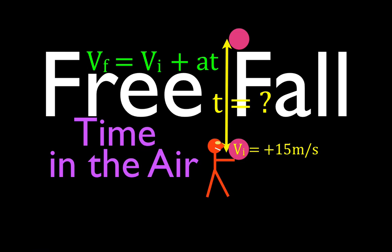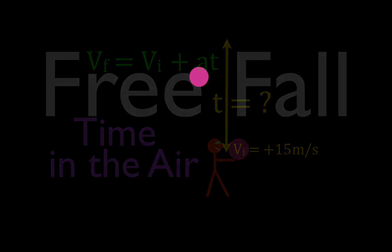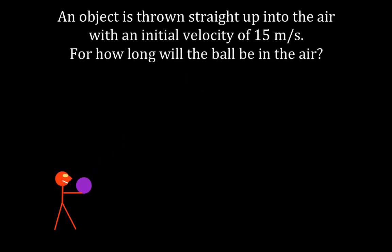In today's video we're going to go over another problem involving free-fall kinematics. We're going to determine the total time an object will be in the air when it's launched or projected straight up with a known initial velocity. In this case, the initial velocity is going to be 15 meters per second. The problem says an object is thrown straight up in the air with initial velocity 15 meters per second — for how long will the object be in the air?